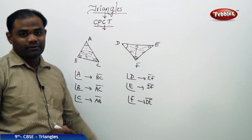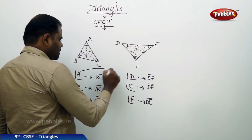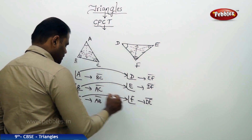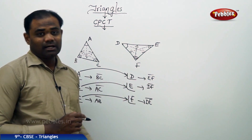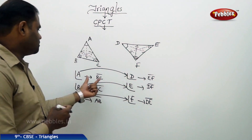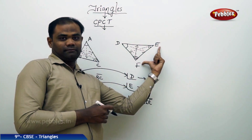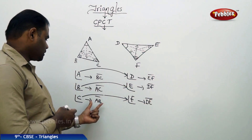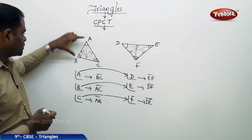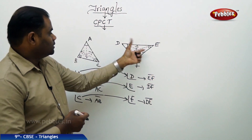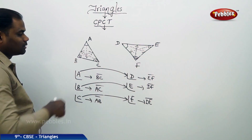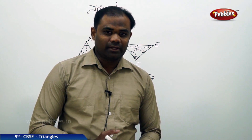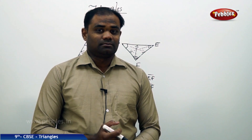Now let's see all three cases. Since angle D corresponds to A, angle E corresponds to B, and angle F corresponds to C, therefore the corresponding sides are: BC corresponds to EF, AC corresponds to DF, and AB corresponds to DE. So like this, if the triangles are in different positions, we can easily identify the corresponding sides, corresponding angles, and corresponding parts.